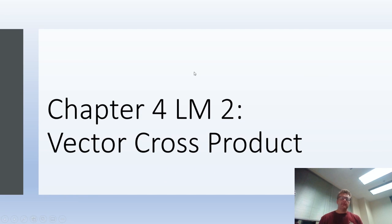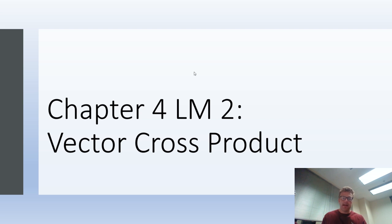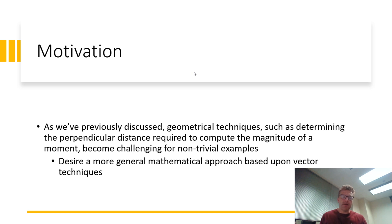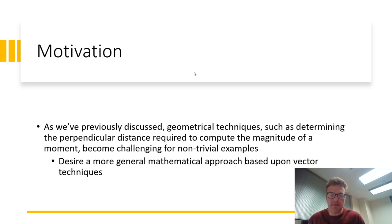For the second learning module of chapter 4, we'll look at how to compute the cross product using vector techniques. This product is often called the vector product because, contrary to the dot product introduced in chapter 3 that produced a scalar when you took the dot product of two vectors, this operation will actually produce a vector. As foreshadowing, it will be useful to allow us to have a uniform technique to compute the moments of forces.